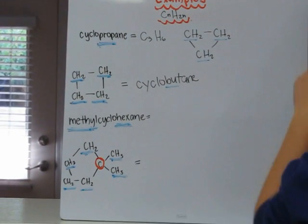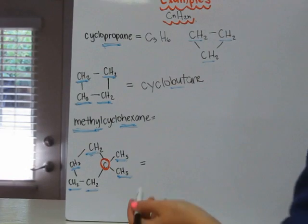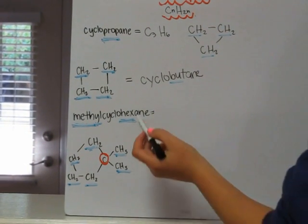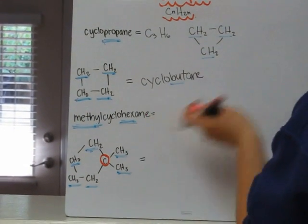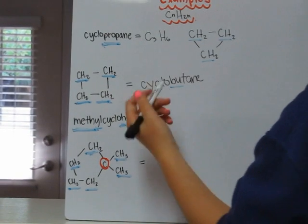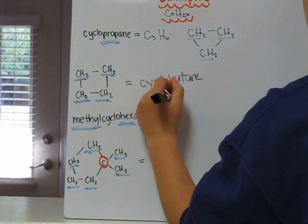So the next example is methylcyclohexane. To draw that, we know hexane means six, and cyclo means they're in a continuous chain. So it would look something like this.